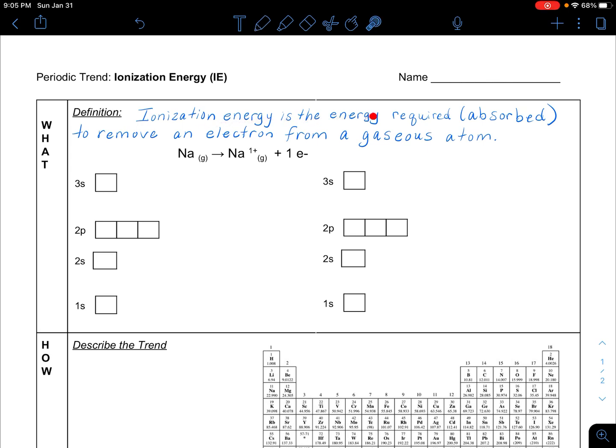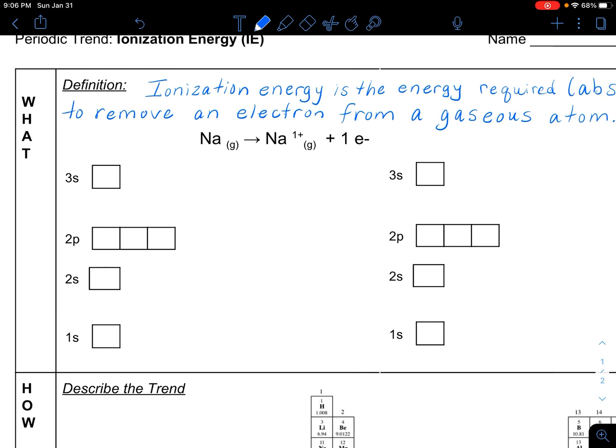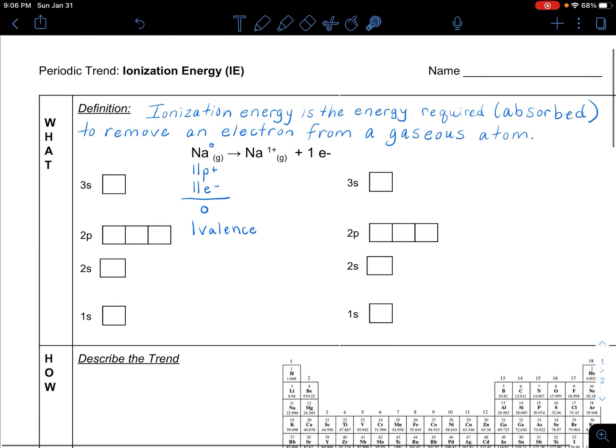So ionization energy is defined as the energy that's required or absorbed, meaning you have to add it in, to remove an electron from a gaseous atom. So let's just look at the atom sodium, which would currently have a zero for what's called a charge or a net charge. If you look at the periodic table, it has atomic number 11, and if it's neutral, it would also have 11 electrons.